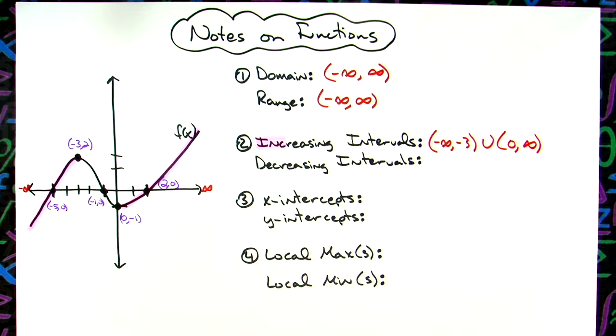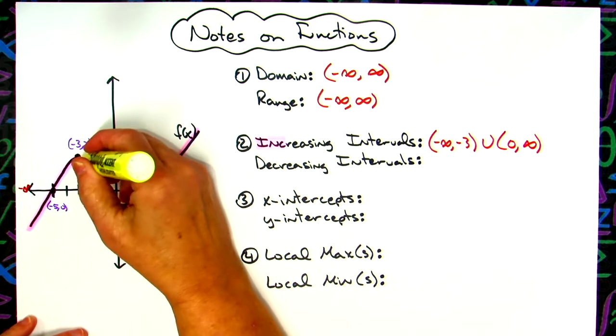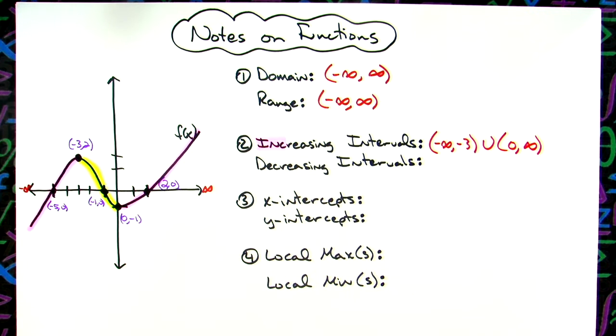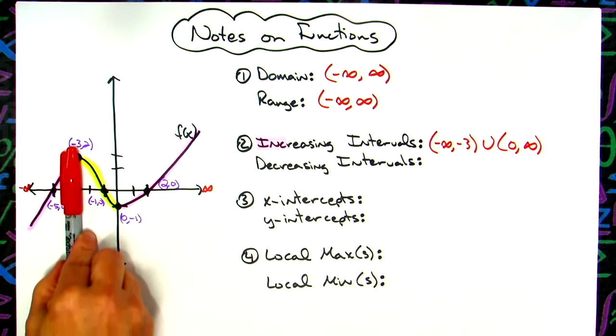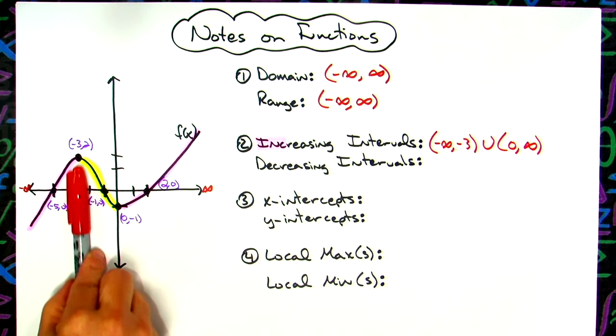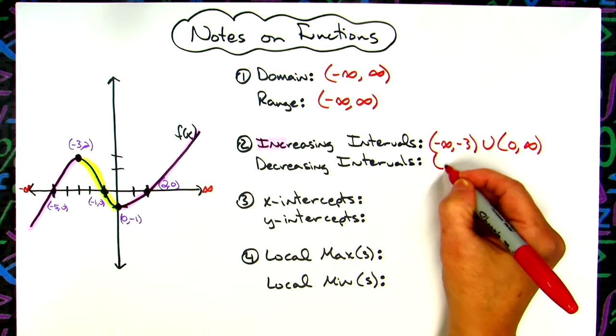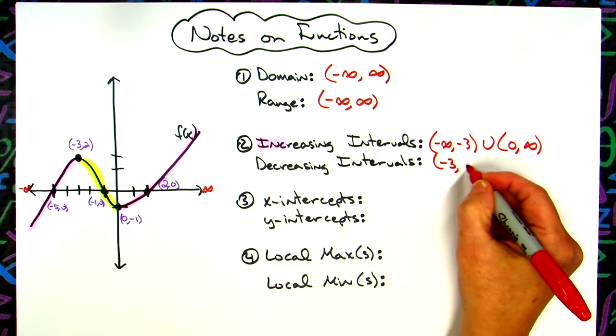Now if we take a look at the decreasing intervals, it's decreasing in this portion of the graph. So again, I want my x values. So it starts decreasing here at an x value of negative 3 all the way over to the x value of 1. We want curvy brackets again because we're looking at intervals.